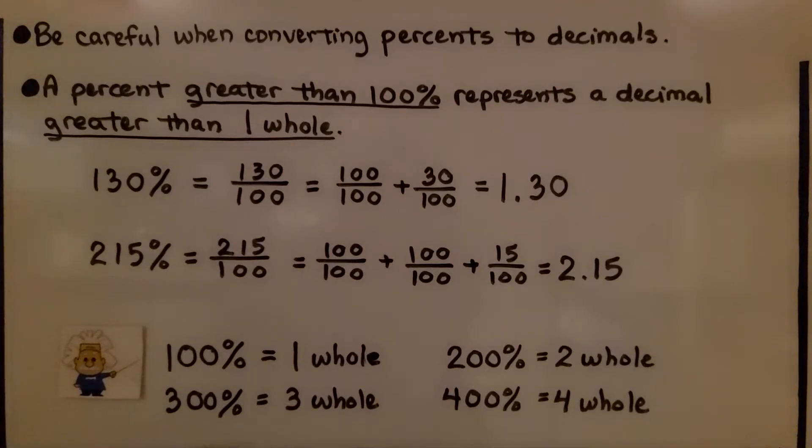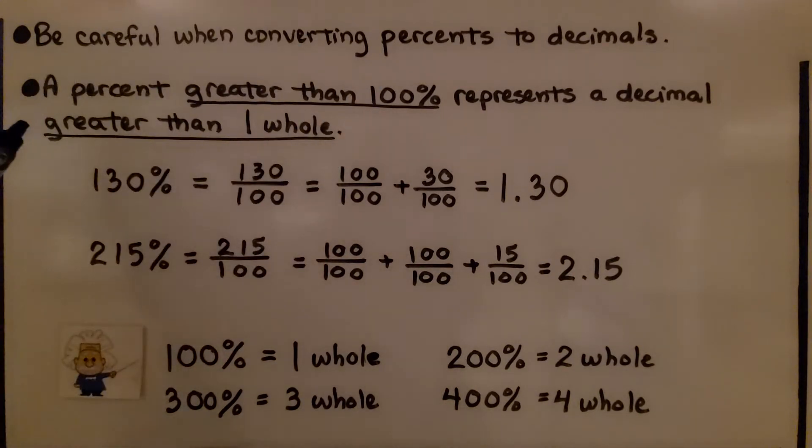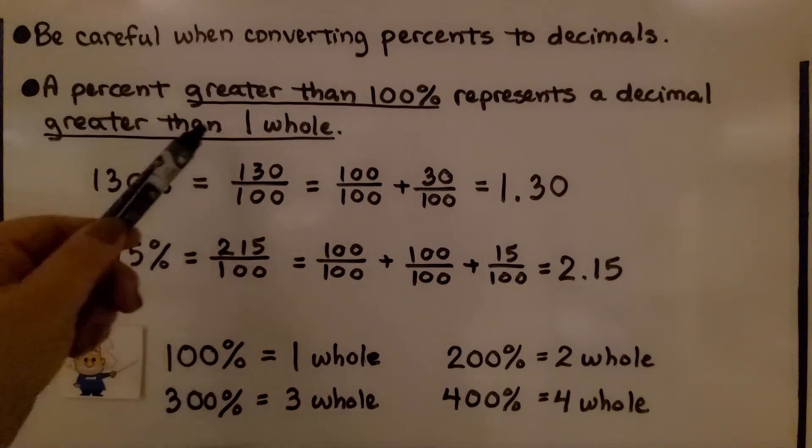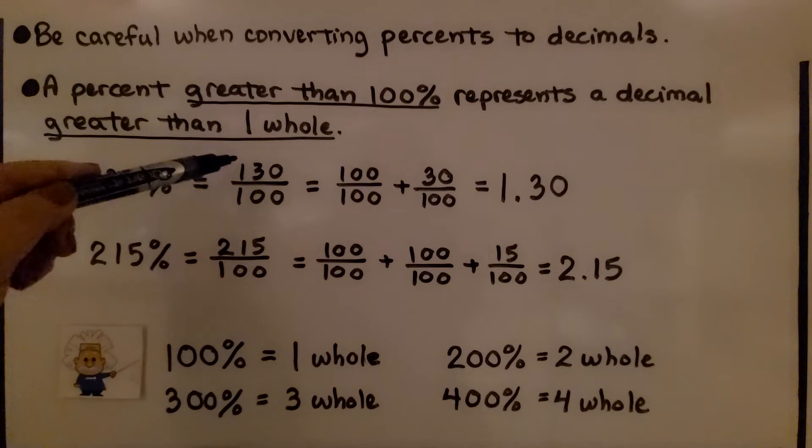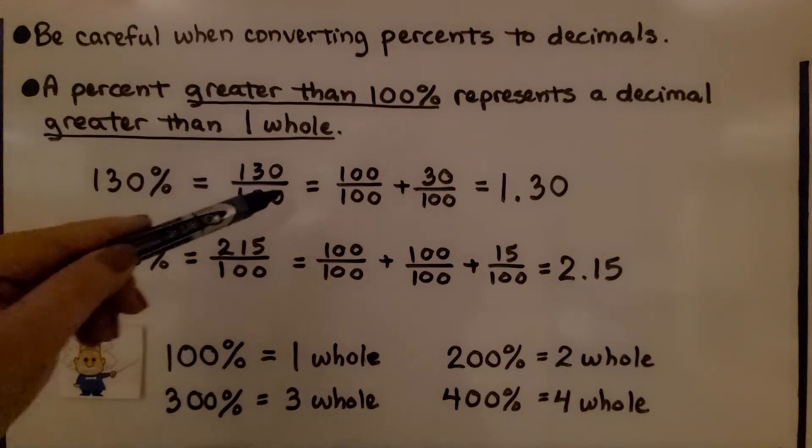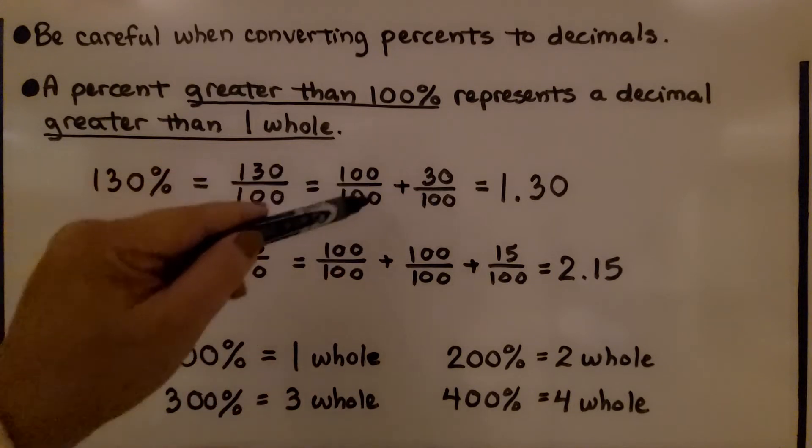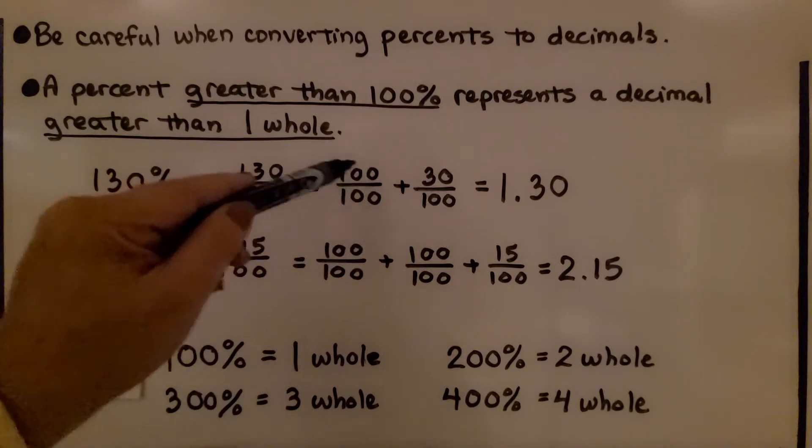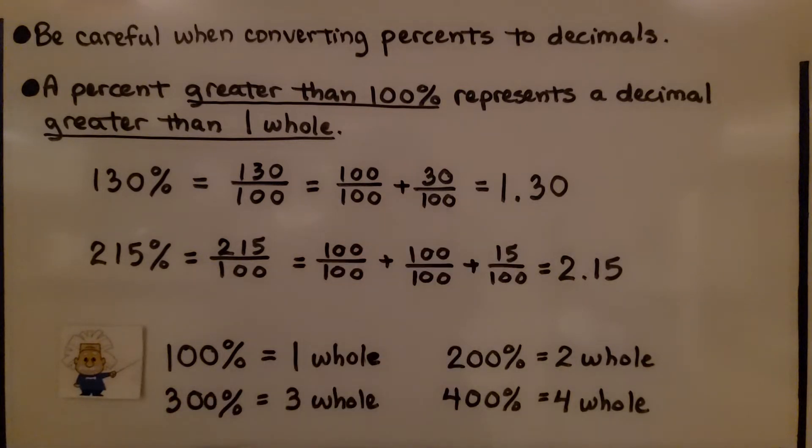Be careful when converting percents to decimals. A percent greater than 100% represents a decimal greater than one whole. 130% equals 130 hundredths, that's 100 hundredths plus 30 hundredths. We have one whole, same numerator and denominator, we have 1 and 30 hundredths.